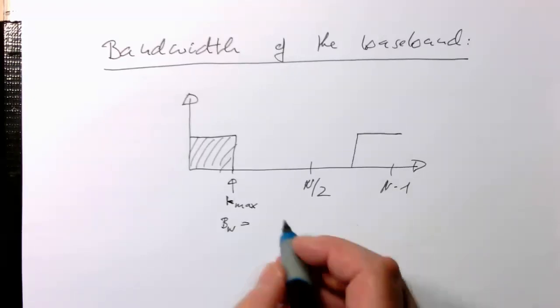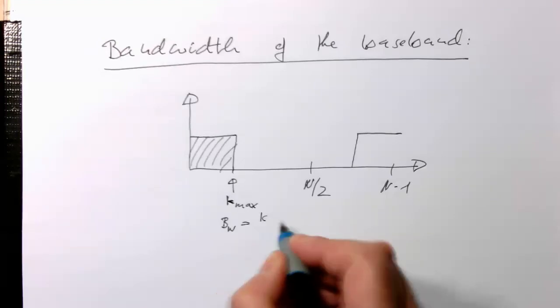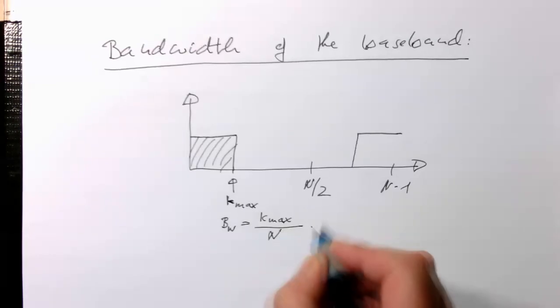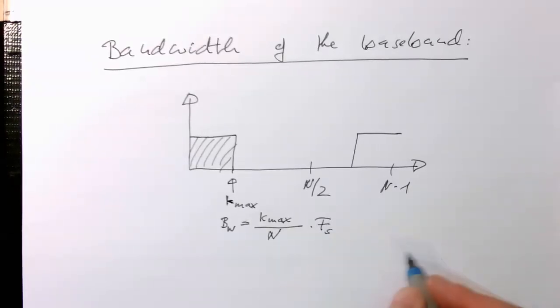Which is k_max divided by N multiplied by fs.